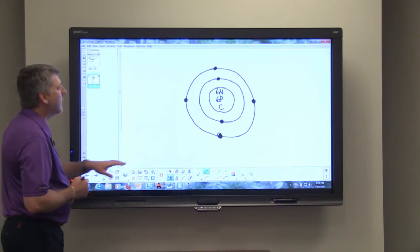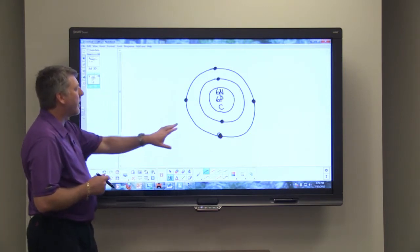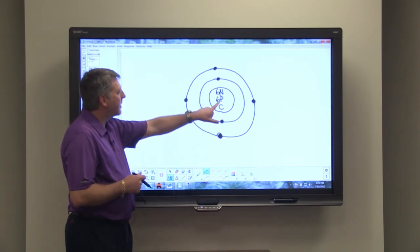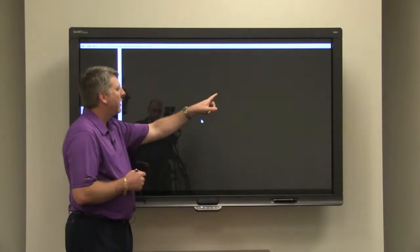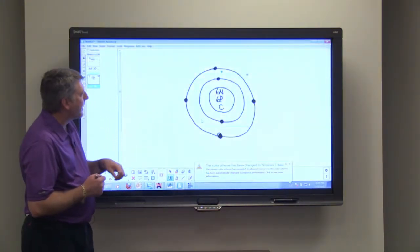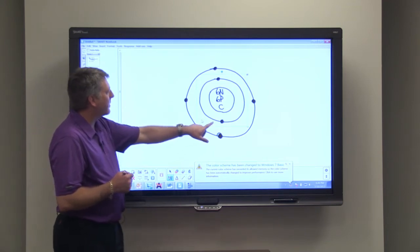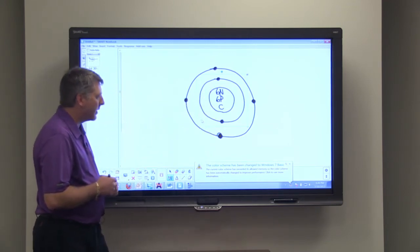If we look at a carbon atom, and I've just drawn a rudimentary diagram of a carbon atom here, you can see that the carbon nucleus contains six protons and six neutrons. So that gives us two electrons in the first shell and then four valence electrons.